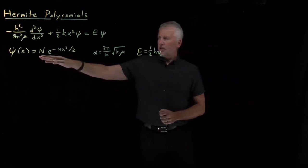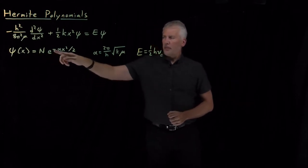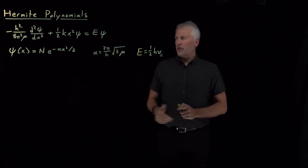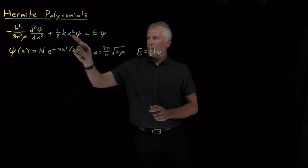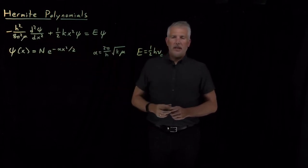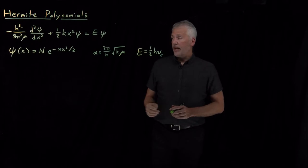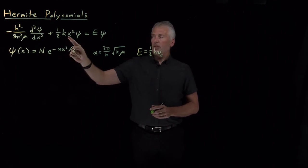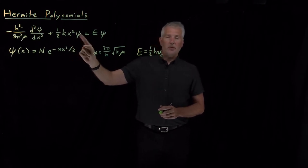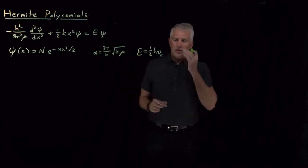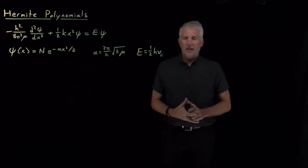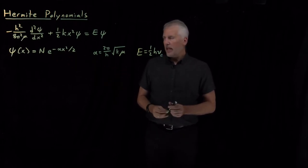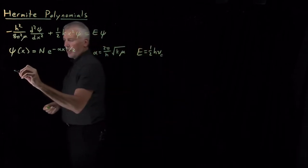We know one function, psi of x equals e to the minus x squared with some constants, that solves the harmonic oscillator Schrödinger equation. When we insert this psi into the Schrödinger equation, the left side equals the right side. The primary reason is that when we take the second derivative, it pulls down two extra powers of x, which cancel the x squared times the wave function in the potential energy term. That feature — pulling down two extra powers of x — is just a feature of the e to the minus x squared term, and it would happen with other mathematical functions as well.